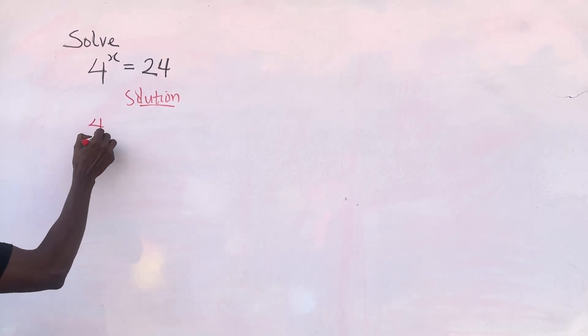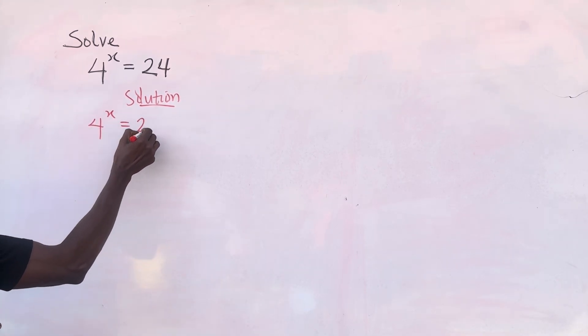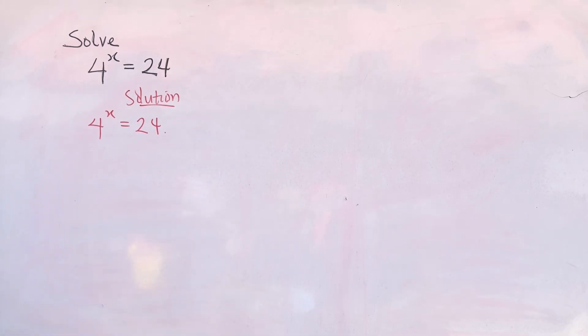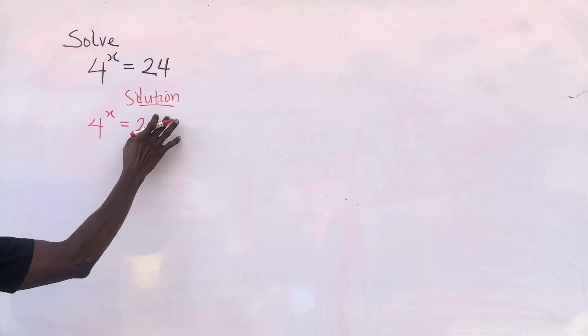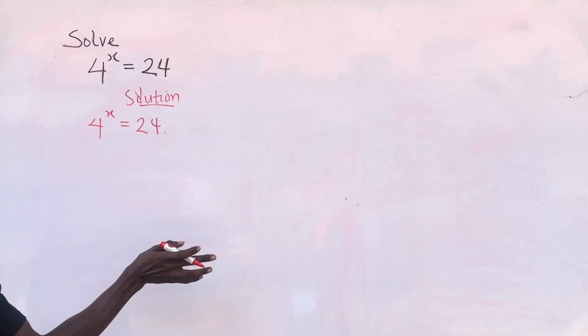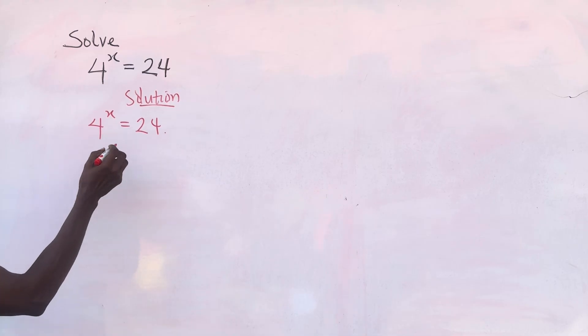So what we have is 4 raised to the power of x equal to 24. We can introduce logarithms from here because we cannot put 24 as 4 raised to the power of any integer. So let's introduce logarithms.